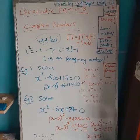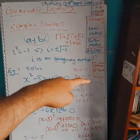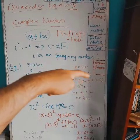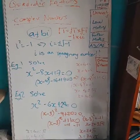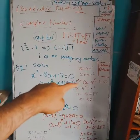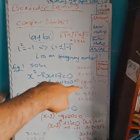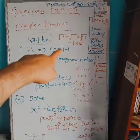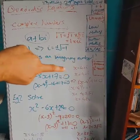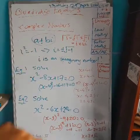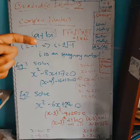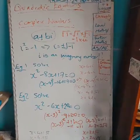This gives x minus 4 all squared plus 1 equals zero, since minus 16 plus 17 is plus 1. Rearranging by subtracting 1 from both sides: x minus 4 all squared equals minus 1. Taking the square root: x minus 4 equals plus or minus the square root of minus 1, so x equals 4 plus or minus the square root of minus 1, which is plus or minus i. Therefore the roots are x equals 4 plus i and x equals 4 minus i.